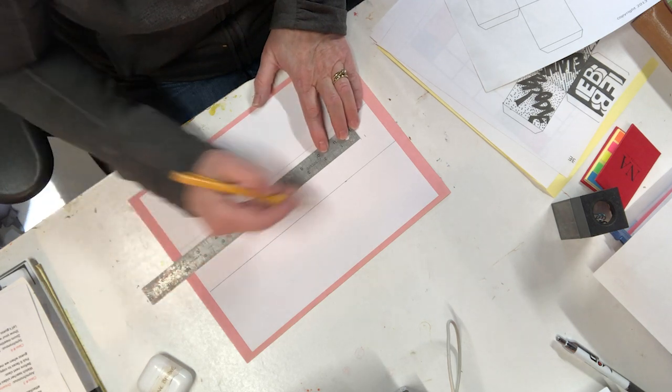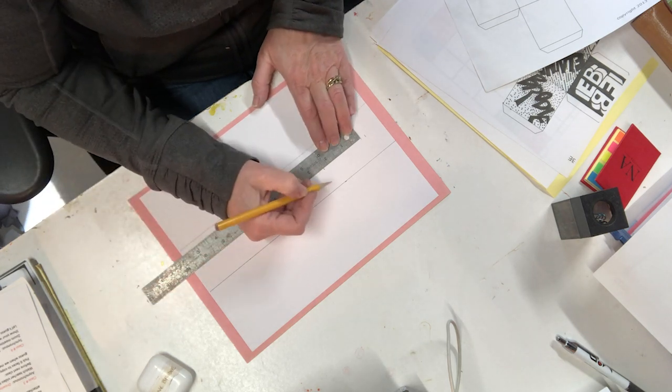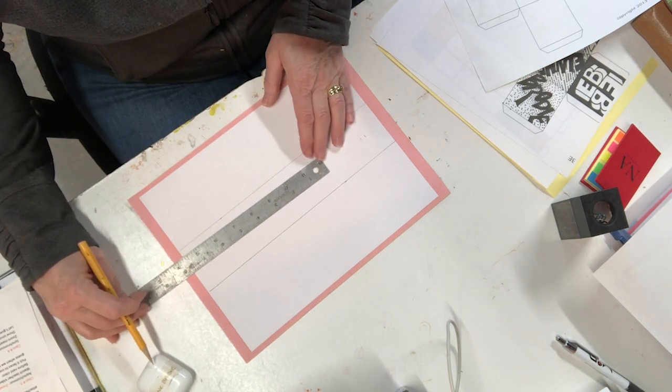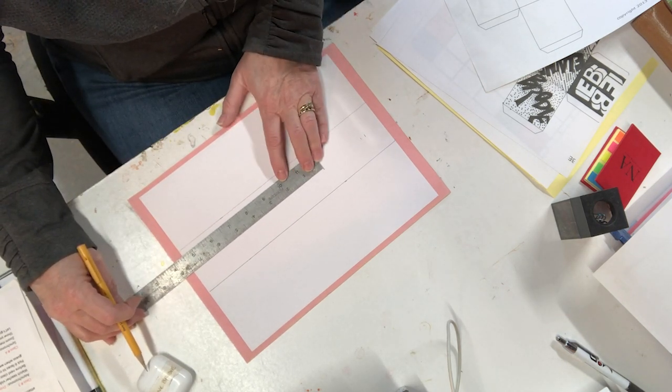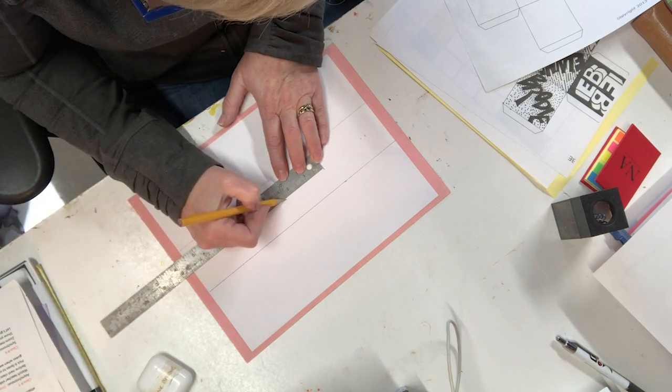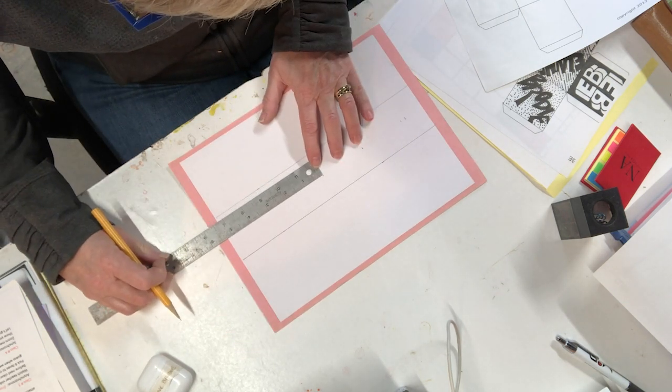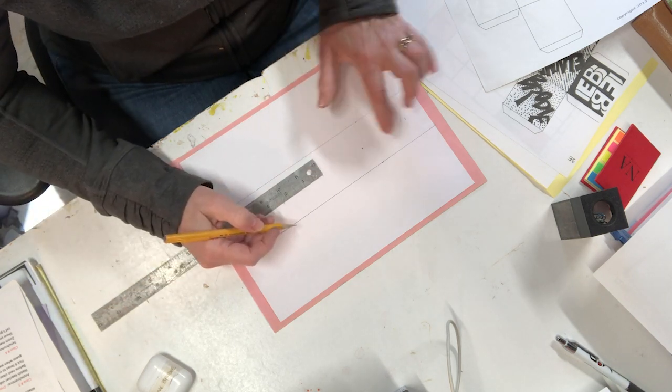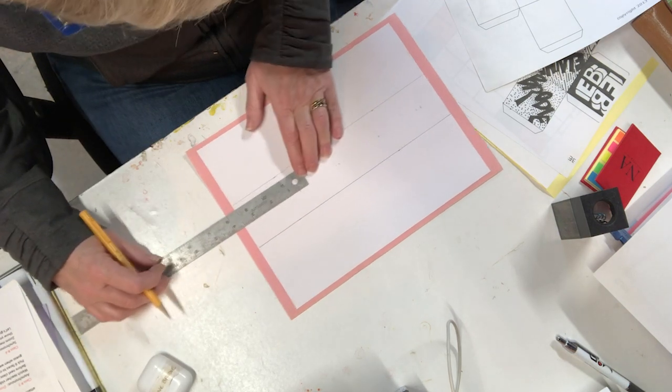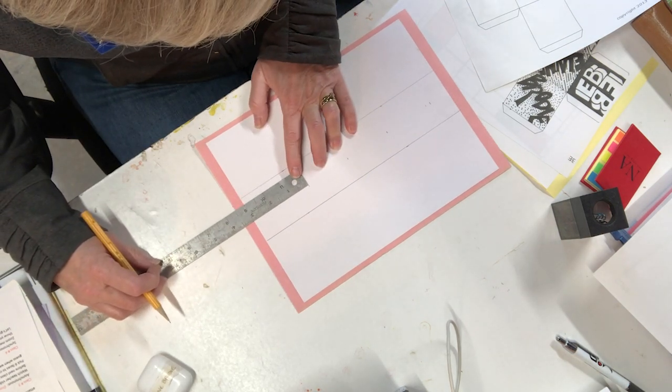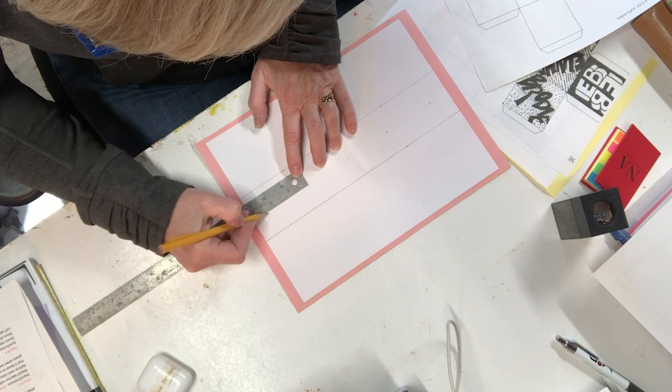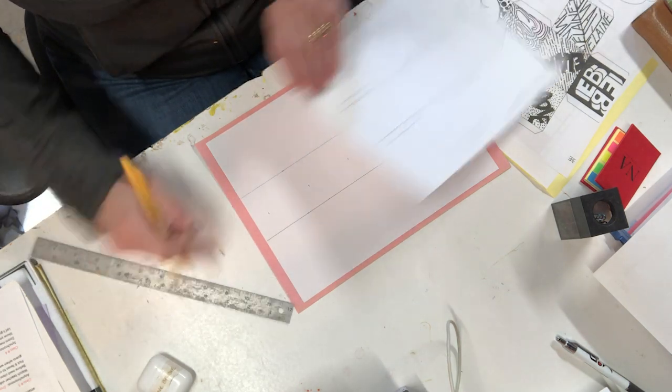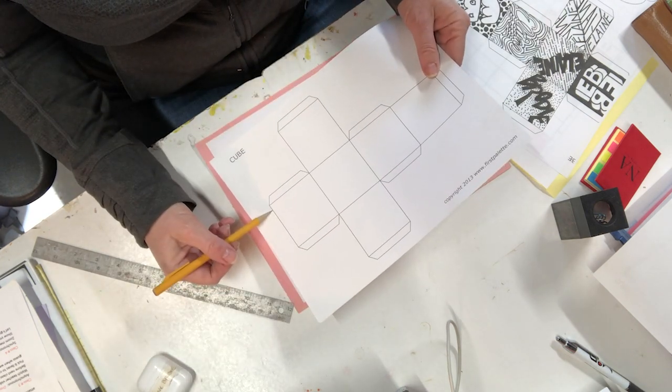Now it gets easier because I'm going to line up there and come up two and a quarter. They're two and a quarter boxes. I'm going to move my ruler up again. It's hard to figure the two and a quarter so it's easier just to start at the end each time. I need four boxes so I'm going to make another mark two and a quarter.